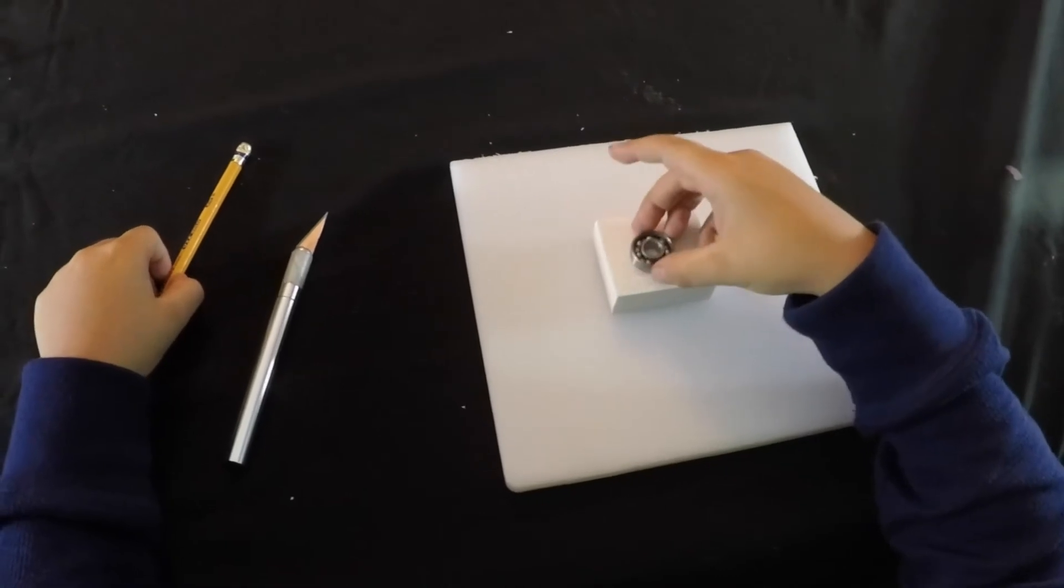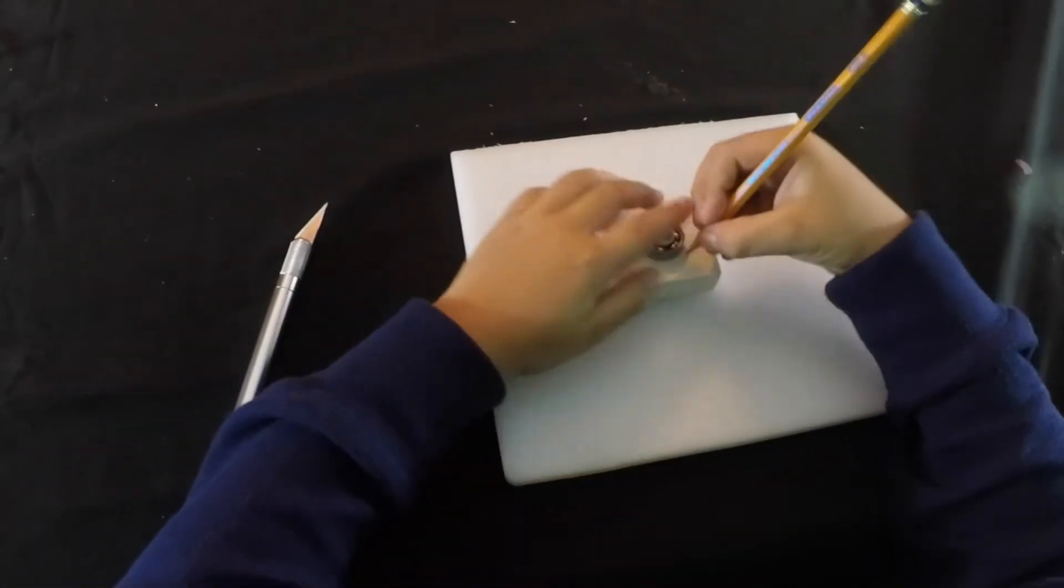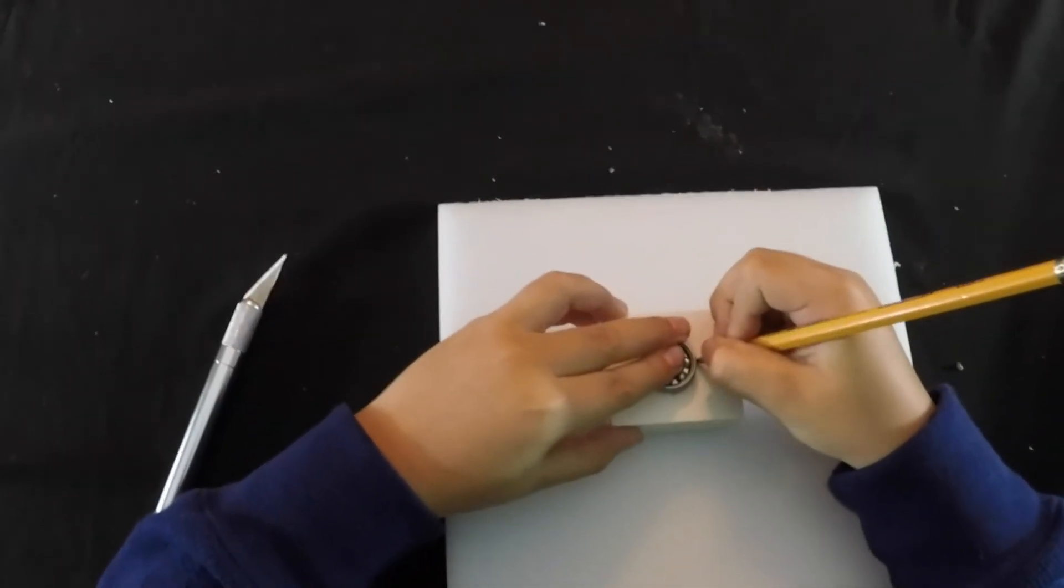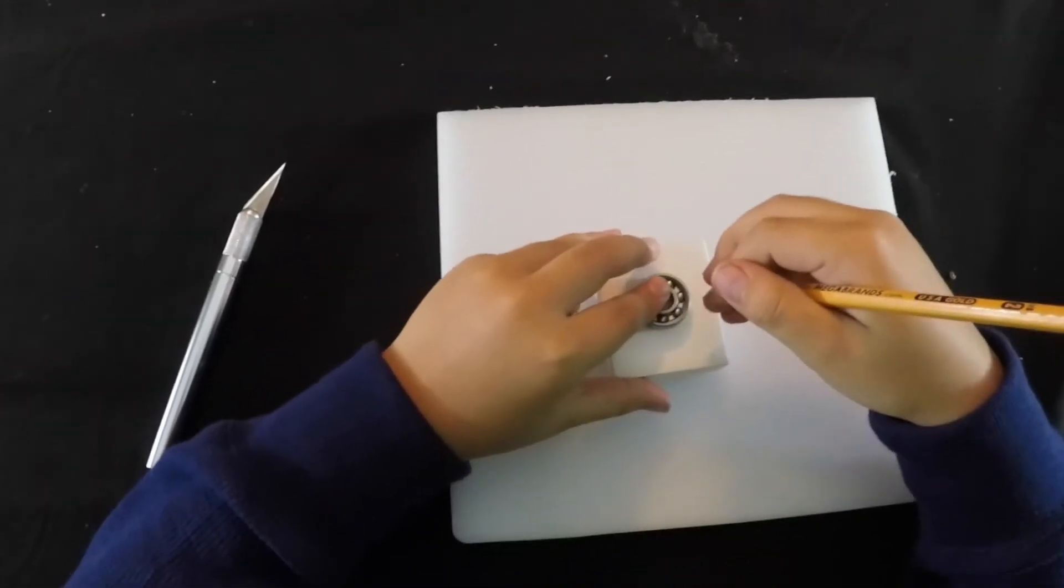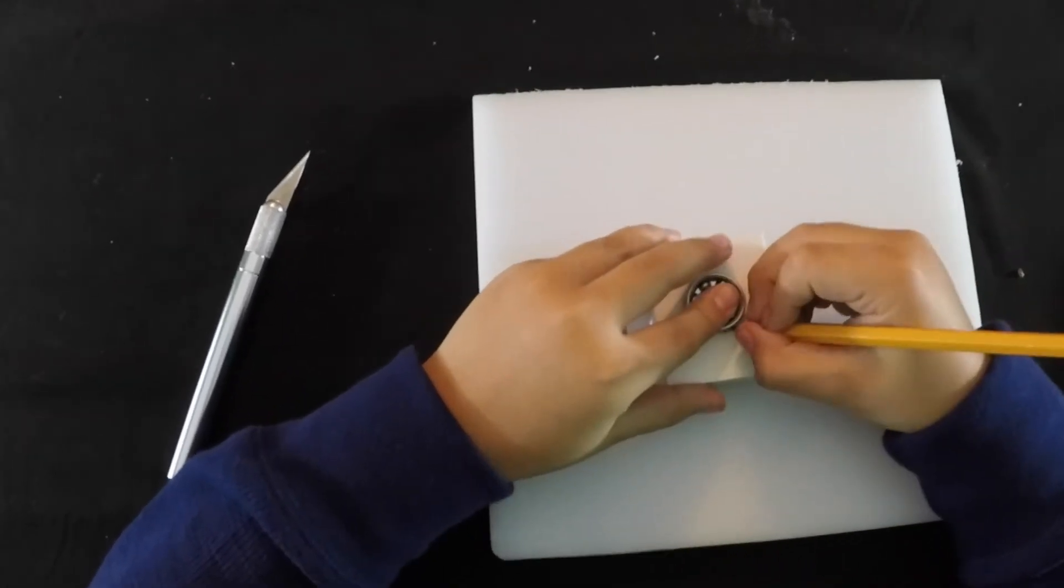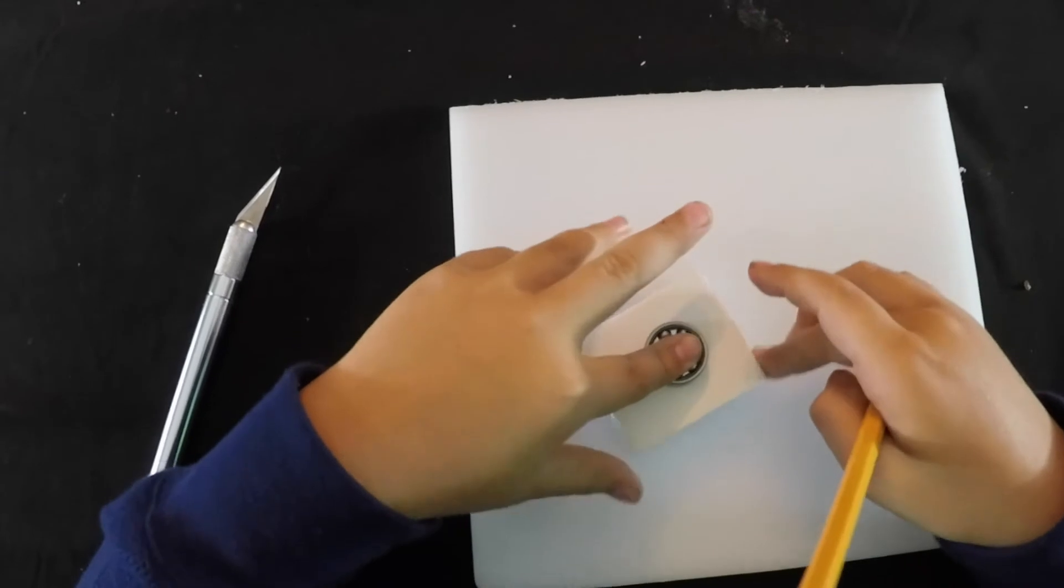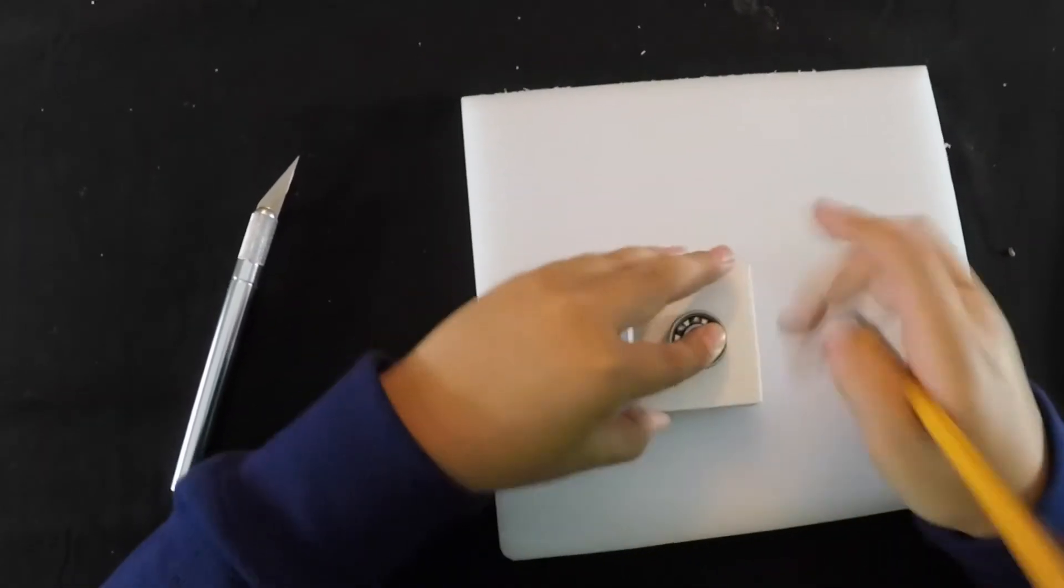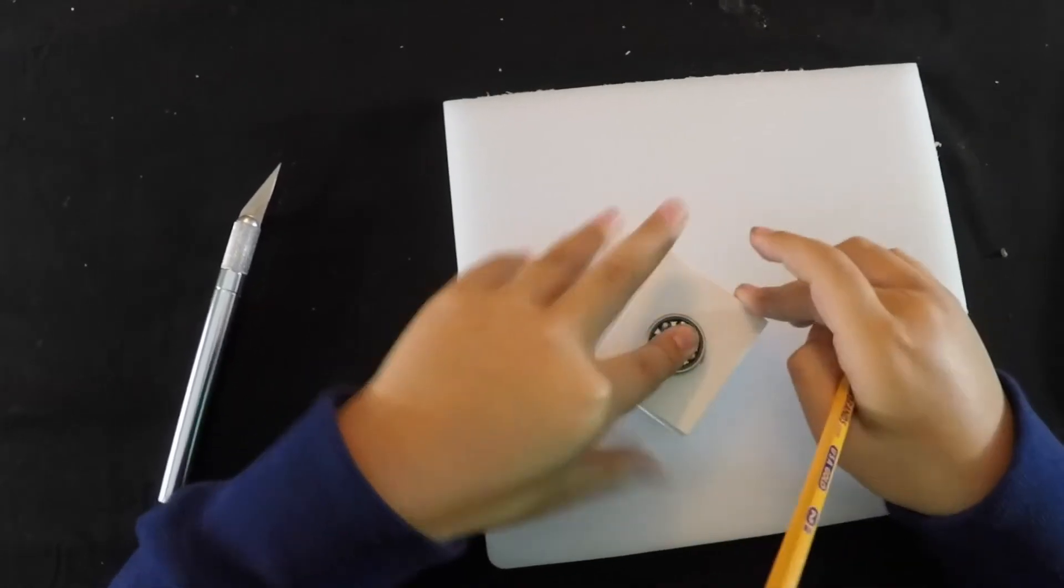First we're going to place the bearing in the middle of the eraser, then trace it with the pencil. Okay, oopsie-daisy, and now let's trace around it like this.